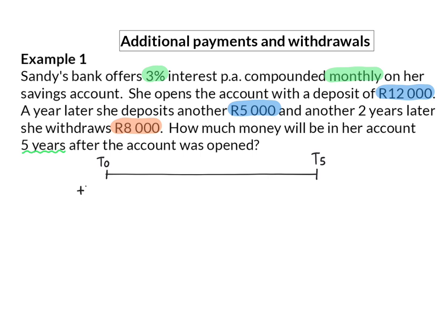Right at the beginning, Sandy deposited 12,000 rand into the account. A year later, she deposits another 5,000 rand, so at T1, she added 5,000 rand to the account. It's important to notice that the next description says another 2 years later. The word 'another' implies 2 years after the previous amount, so 2 years from year 1 will be at T3. And here she withdraws, meaning we are going to subtract 8,000 rand from the account.